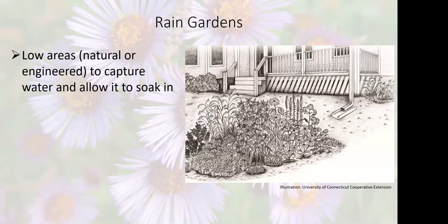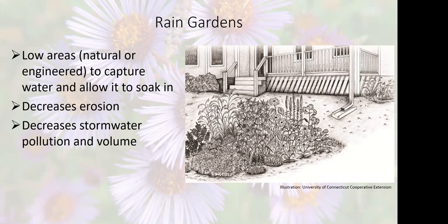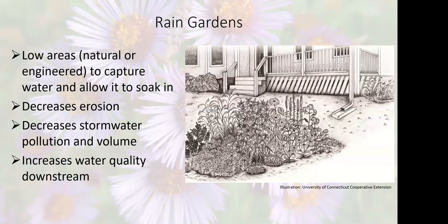A rain garden is a low area — either a natural low spot or a man-made depression — that allows water to be captured and slowed down so it can soak in over a short period of time. It decreases erosion, decreases the pollution and volume of stormwater, and increases water quality downstream. By removing sediments and filtering out pollutants, the water that does reach streams and lakes is of better quality.